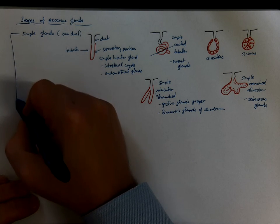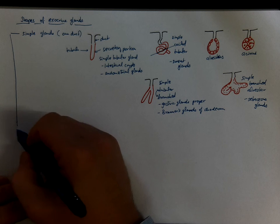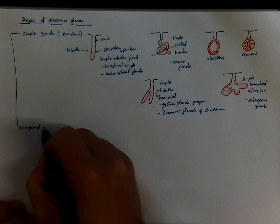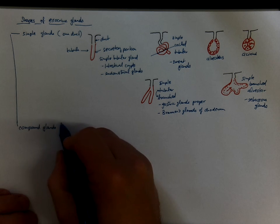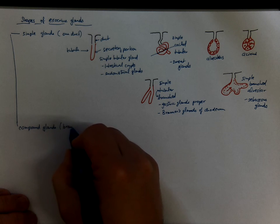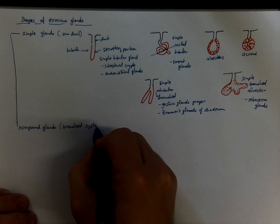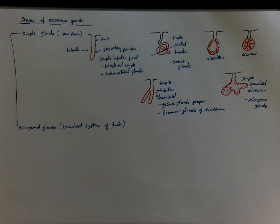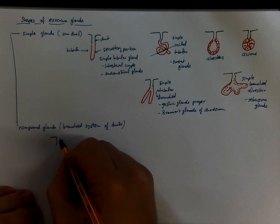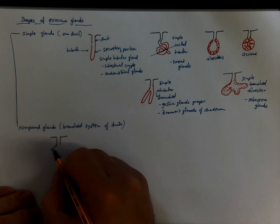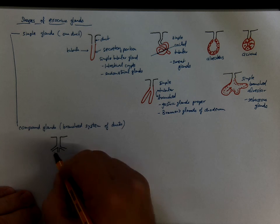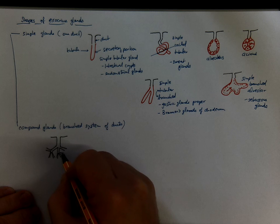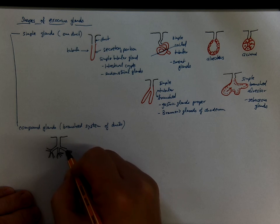What if the duct is branching into a whole system of ducts? Then we call these glands compound. Compound glands have branched system or tree of ducts. So there is a main duct. There are smaller ducts and a confluence of next generations of ducts.